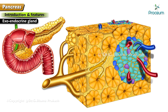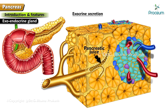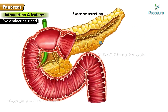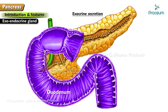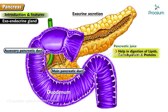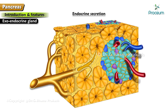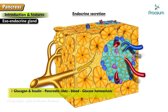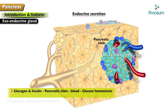It is an exoendocrine gland which produces an exocrine secretion — pancreatic juice from the acinar cells — that enters the duodenum through the main and accessory pancreatic ducts, and helps in digestion of lipids, carbohydrates, and proteins. Endocrine secretions — glucagon and insulin — from the pancreatic islets enter the blood and help in maintaining glucose homeostasis.